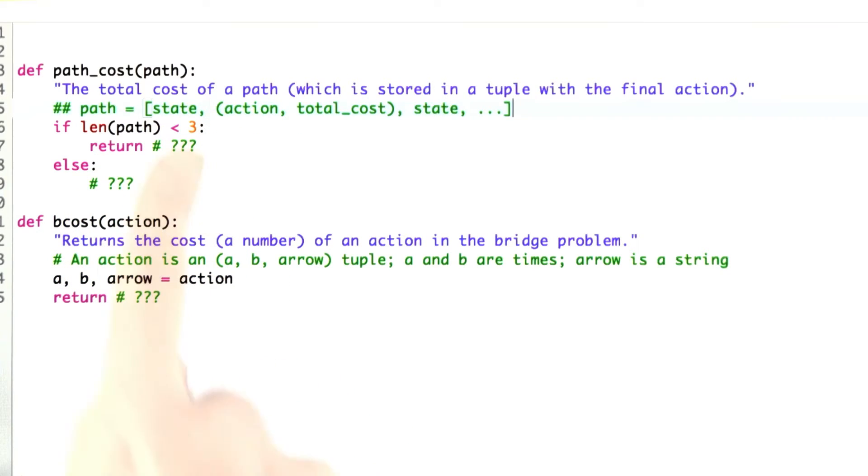And then I also want you to define the bridge cost. Bcost is the abbreviation I'll use. And that's the cost of an individual action. So an action in this domain is something like 2, 5, arrow to the right. And I want you to figure out what's the cost of that action.